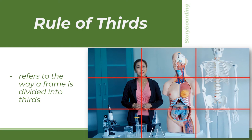Another element in storyboarding that we need to understand is the rule of thirds. From the illustration provided, you can see nine sections within a single frame. Basically, rule of thirds is a guideline which applies to the process of composing visual images such as film and video making. Studies have shown that when viewing images or motion pictures, people's eyes usually go to one of the intersection points most naturally rather than the center of the shot.